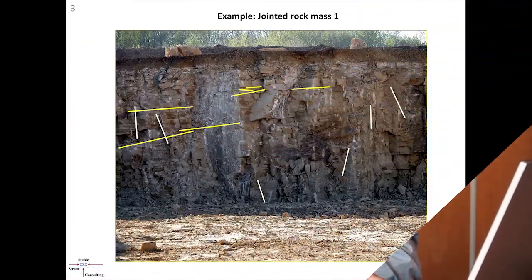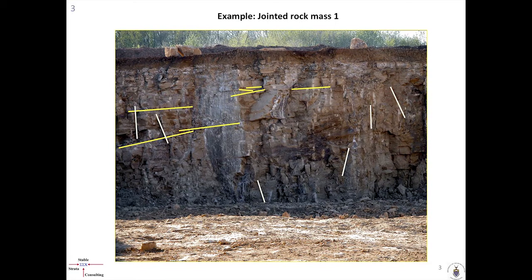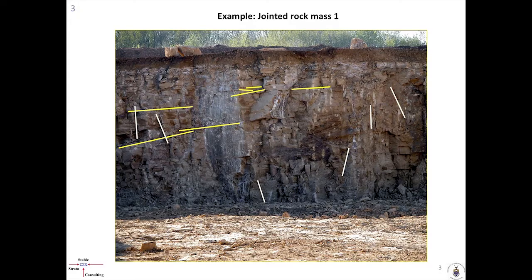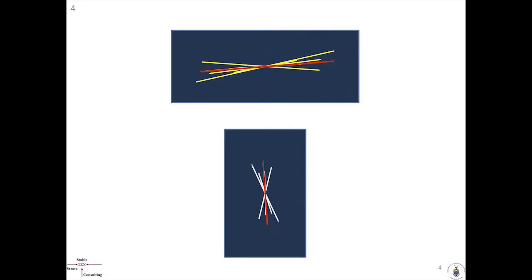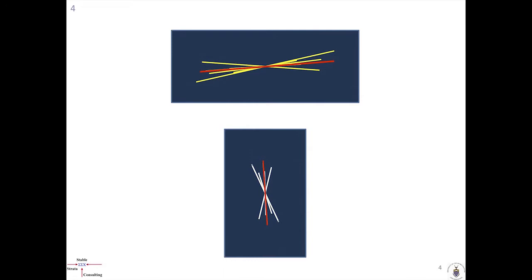I'm showing an example of a jointed rock mass, just to indicate the variability in rock. Here we're looking at the orientation of joints — some colored in yellow are approximately horizontal, and the lighter ones are approximately vertical. If we take them out and plot them separately, you can see the horizontal ones on the top picture and the vertical ones on the bottom. They actually vary quite a bit. What we normally do in rock engineering — and I wish I could say what we used to do — is simply calculate one average value for the horizontal ones and one average value for the vertical ones.